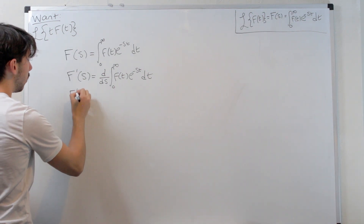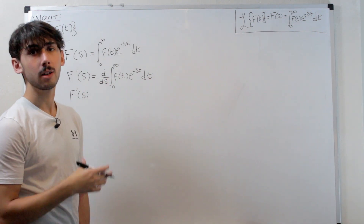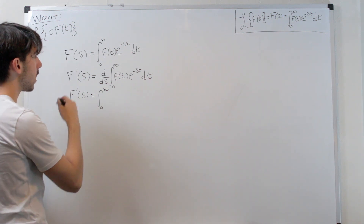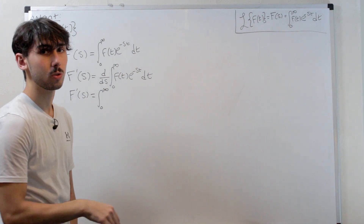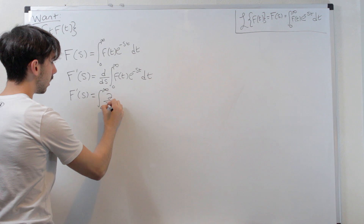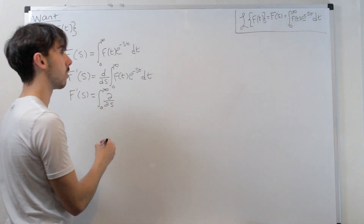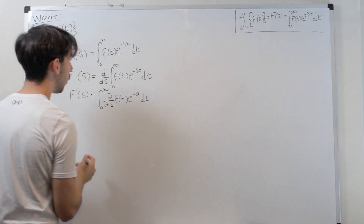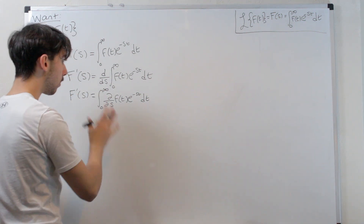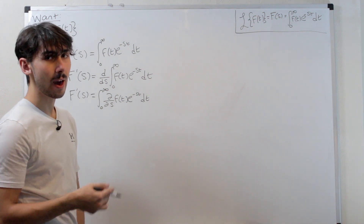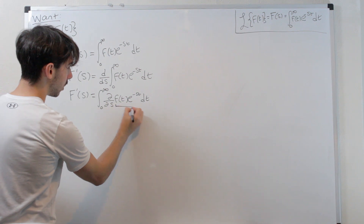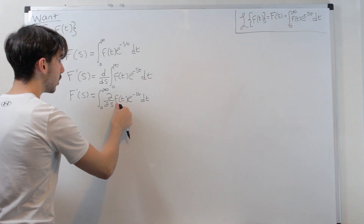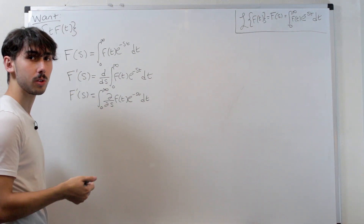It turns out that we can bring the derivative inside of the integral and differentiate the inside. The typical convention is when you move the derivative inside of an integral it becomes a partial derivative, so I'm going to write it with curly d's, but it's still with respect to s. If you've seen the partial derivative before this will make perfect sense; if not, just imagine that it's the normal derivative. All the partial derivative is, is differentiating a multi-variable function with respect to — in this case — s. This function is a function of t and s, so we only want to differentiate with respect to s, and we just pretend that t is a constant in the s world.